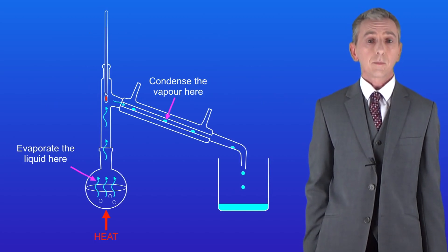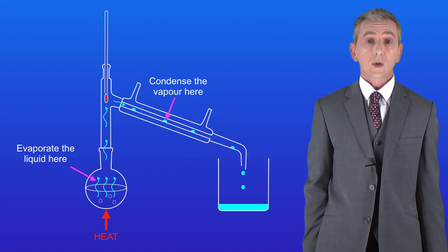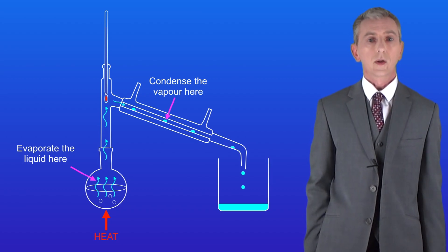In the last video we saw that simple distillation can be used to separate a liquid from a solid if we want to keep the liquid. First we heat our solution to evaporate the liquid turning it into a vapor. Then we cool the vapor to condense it back to the liquid. We use the apparatus I'm showing you here.